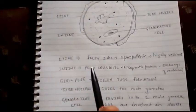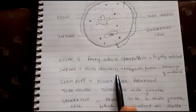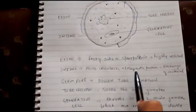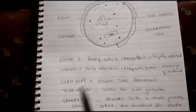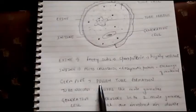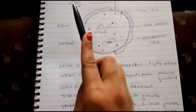Intine is the next smooth layer which is pectocellulosic and made up of enzymatic proteins involved in the exchange of material. The germ pore is involved in pollen tube formation.